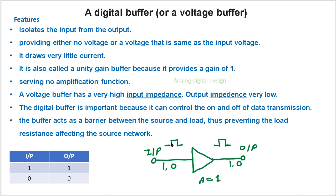It does not amplify the signal. A voltage buffer has a very high input impedance and very low output impedance.